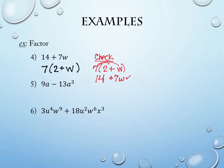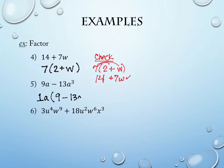For 9a + 13a³, look at the numbers first: 9 and 13 — since 13 is prime, their GCF is just 1. For the variable, both have at least one a, so the GCF is a. Dividing: 9a÷a = 9, and 13a³÷a = 13a². The result is a(9 + 13a²). Remember, we're not dividing exponents — we're dividing the a's out, so three a's minus one a leaves a².